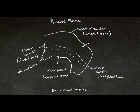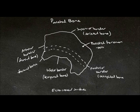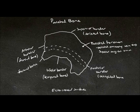On the superior surface, close to the sagittal suture and towards the back, is a foramen called the parietal foramen. This isn't always present, but when it is, it transmits the parietal emissary vein, which anastomoses with the superior sagittal sinus, allowing blood to drain from the cerebral hemispheres of the brain. There is also a raised part of the parietal bone just above this area, called the parietal eminence or boss.